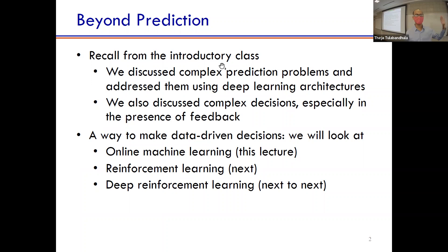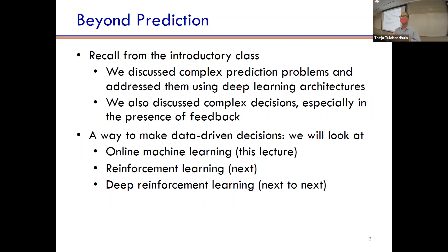In the introductory class, we said we want to look at complex prediction problems — images, text, and so on. We also briefly discussed complex decisions, which involve taking feedback into account. For example, if you're an insurance company, you define a premium for a neighborhood based on flood risk. Some houses make claims, and next year you revise the premium based on the risks you've observed. So you make decisions and you get feedback.